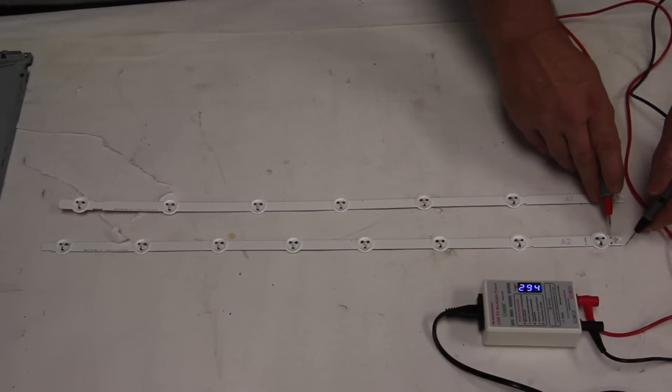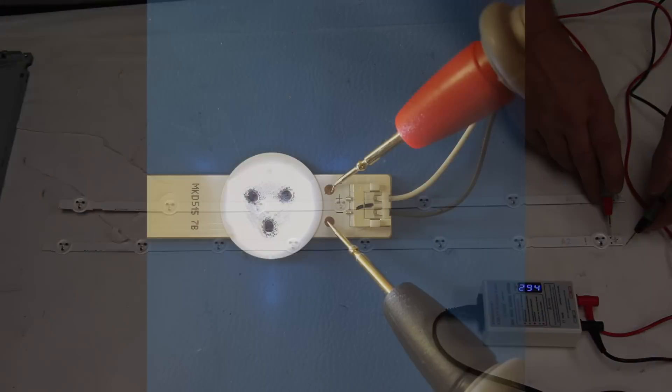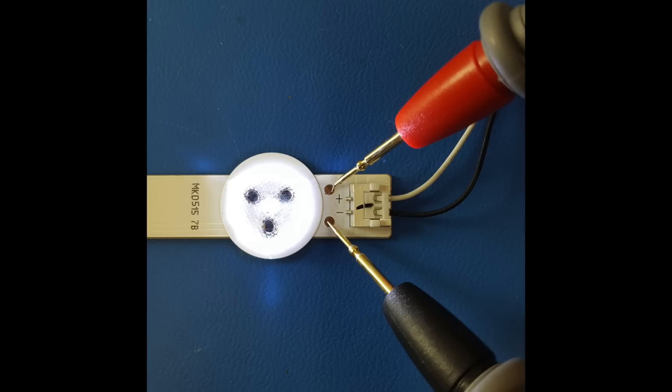The next test that we will show is how to test the LED strip. As you can see, we have two identical strips. I will begin by identifying the positive and negative test points at the end of the strip. Most strips should be labeled as positive and negative.